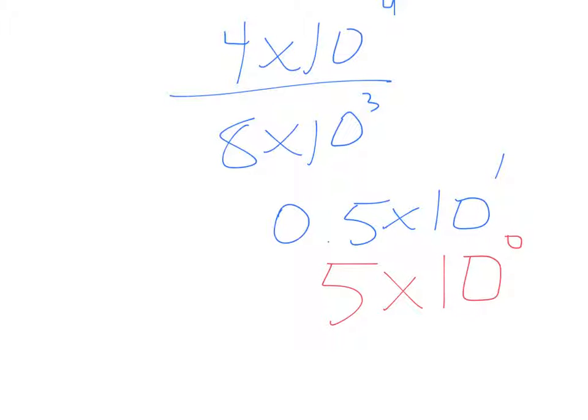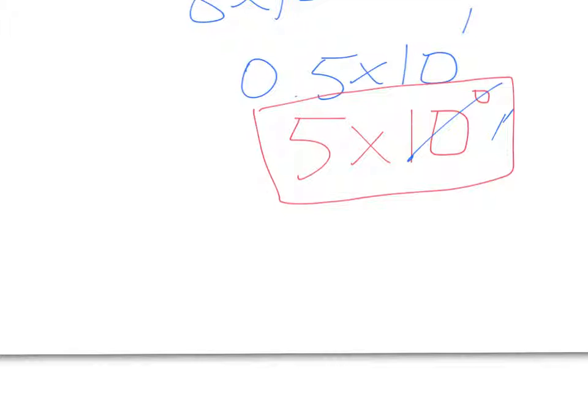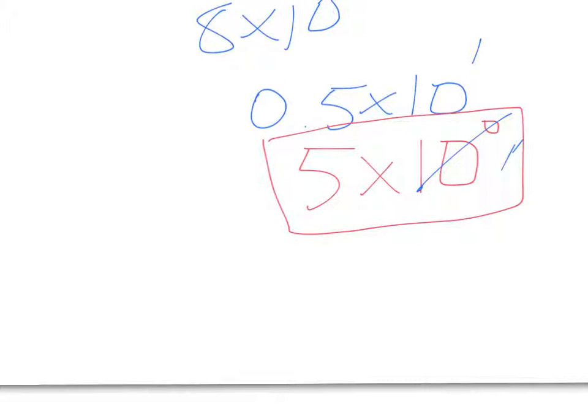So we can leave that as 5 times 10 to the 0, or remember from Unit 1, 10 to the 0 is actually just 1. And 5 times 1 is 5. Either answer is fine. This one's good. That one's good.